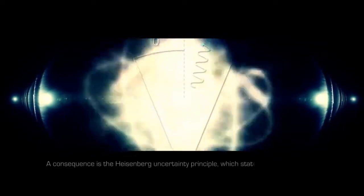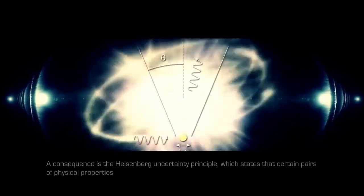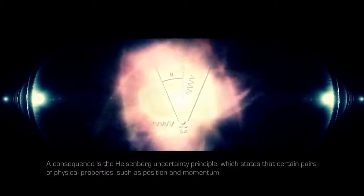A consequence is the Heisenberg uncertainty principle, which states that certain pairs of physical properties, such as position and momentum, cannot be known simultaneously to high precision. In a sense, a single particle is its own field.